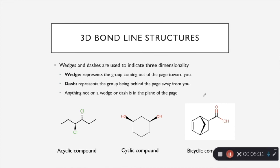So 3D bond line structures are made using wedges and dashes. A wedge is going to represent a group coming out of the page towards you, like this chlorine right here. If you can imagine that this zigzag form is flat on the page, this chlorine would be coming out at you. And then the dash represents the group going into the page behind you or away from you, like this chlorine here. And then anything not on a wedge or a dash is in the same plane of the page.